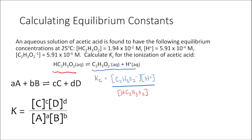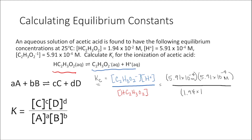Once we write out our equilibrium constant expression, we can plug in the concentrations of these species at equilibrium and solve. The concentration of the acetate ion at equilibrium is 5.91 × 10⁻⁴ M. For Kc, concentrations need units of molarity. The hydrogen ion concentration is also 5.91 × 10⁻⁴ M, and the concentration of acetic acid is 1.94 × 10⁻² M. We report equilibrium constant values without units, and our Kc comes out to about 1.8 × 10⁻⁵.